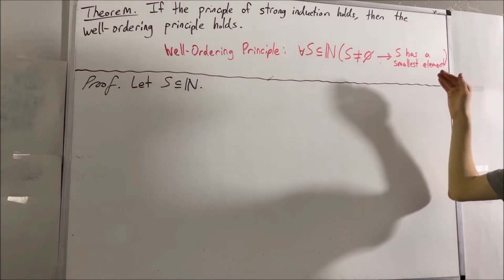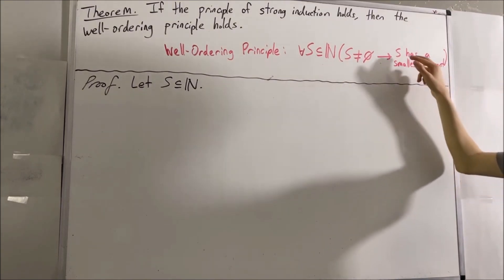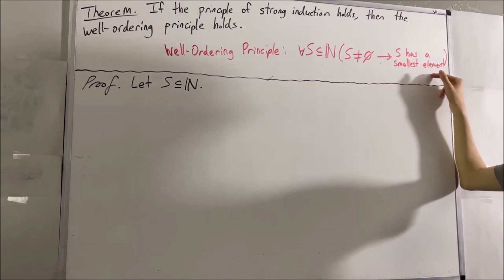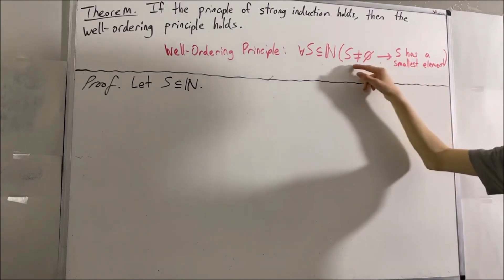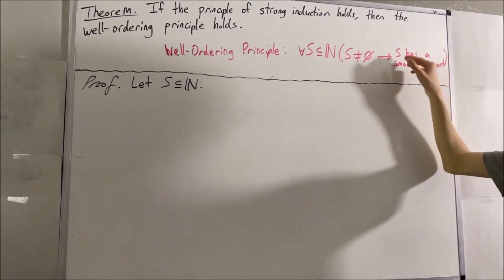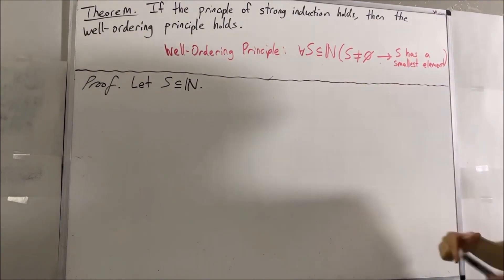We're actually going to prove the contrapositive. That is, we're going to prove: if S does not have a smallest element, then S is empty. So assume S does not have a smallest element.